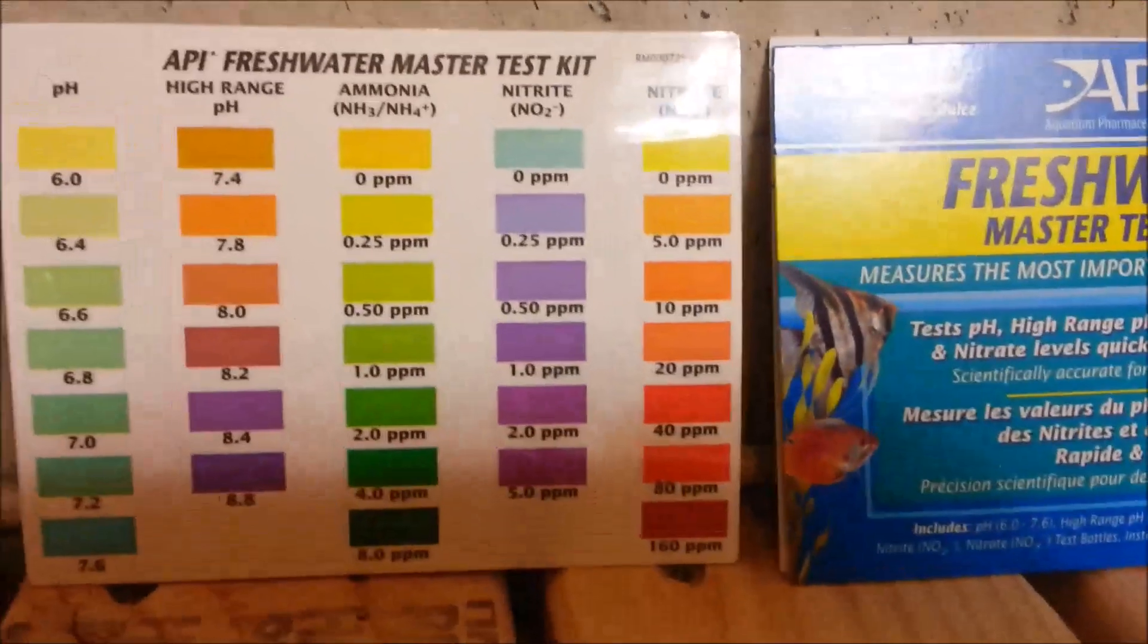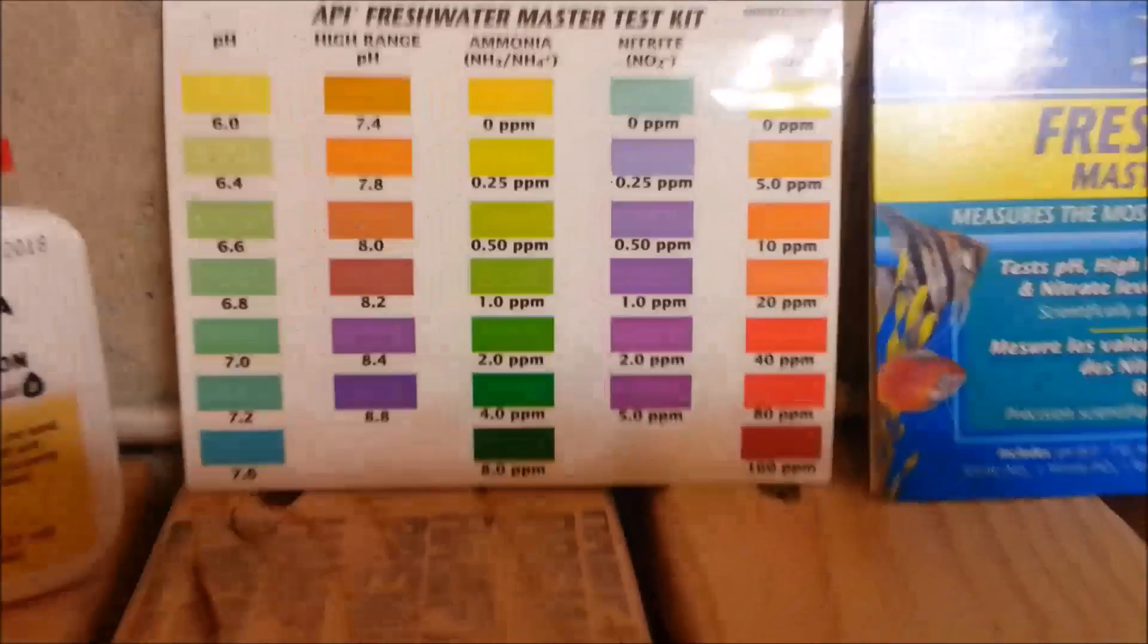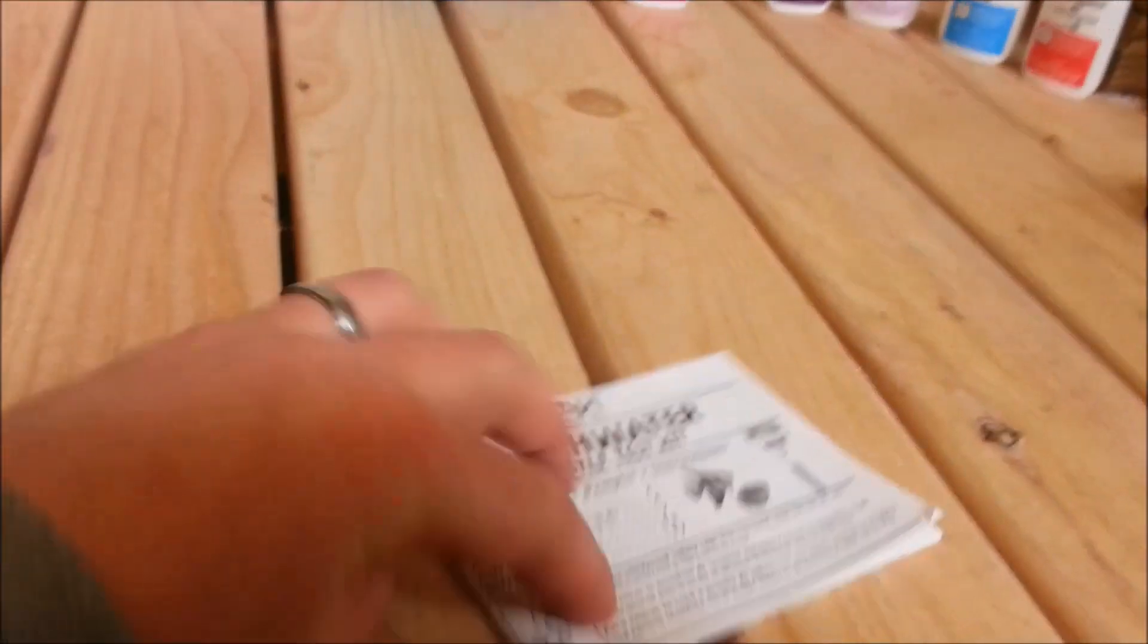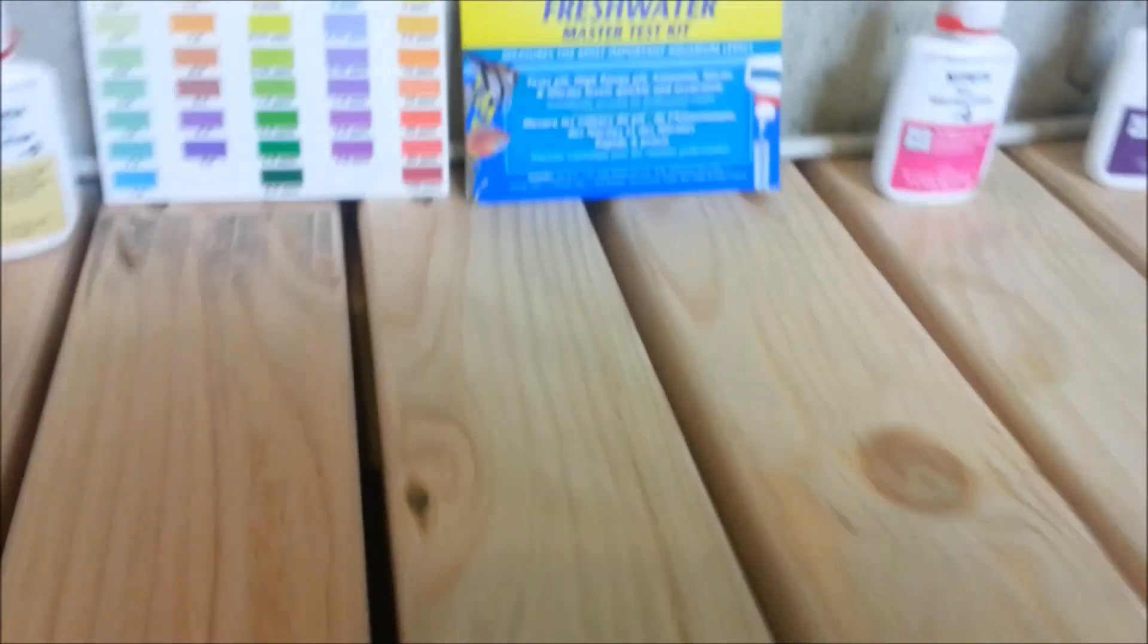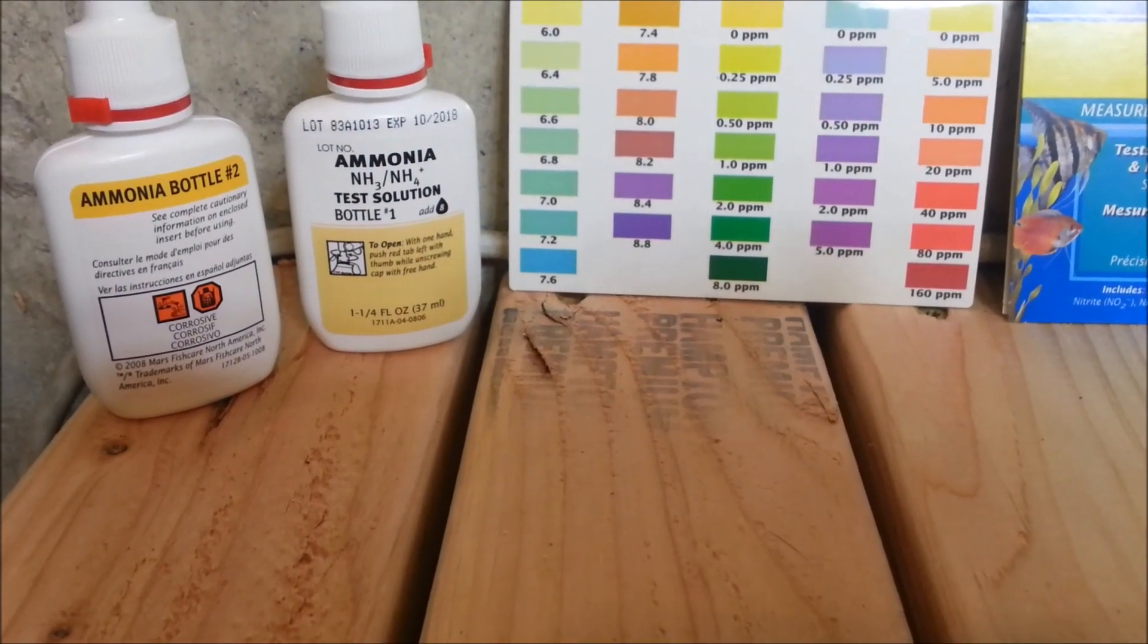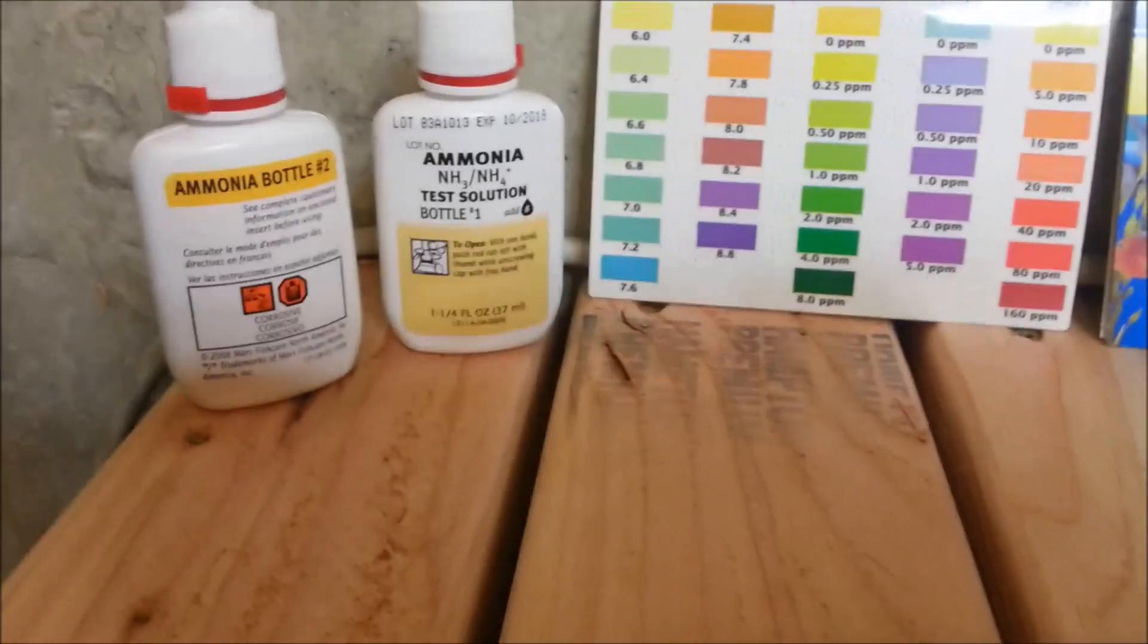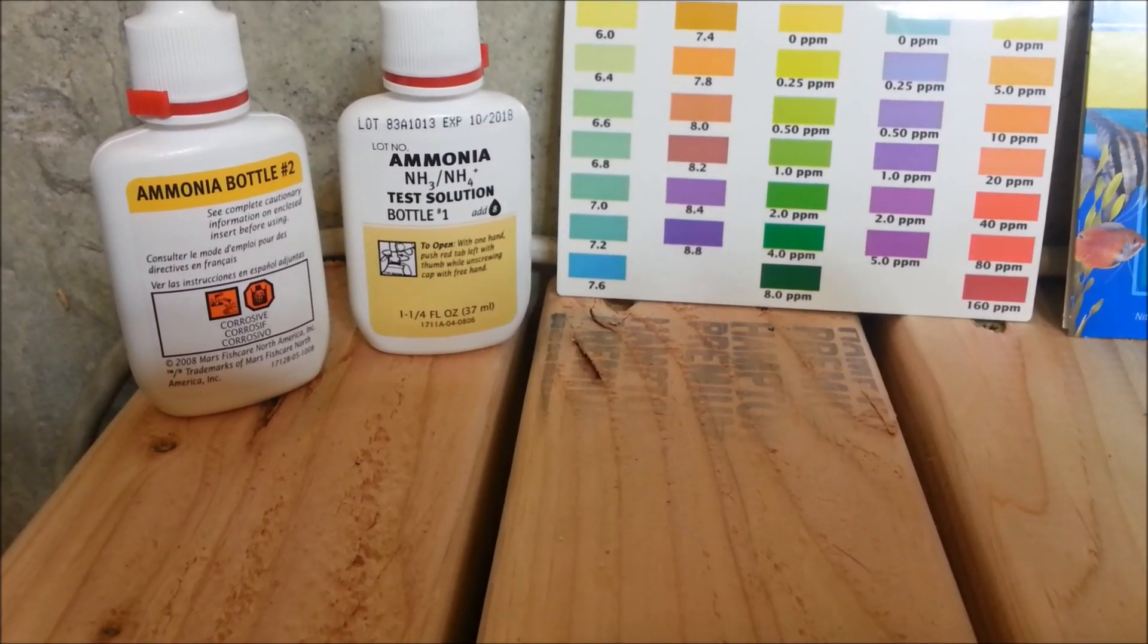For each of the tests there's a little instruction booklet that comes with it. It's really detailed, tells you exactly how to test the water, tells you what the levels should be at. It is for an aquarium, so this is mainly focused on how to take care of the fish, but it kind of tells you where your levels should be at, just gives you a general rule of thumb. Most of the tests just have one bottle, so you just follow the instructions. It tells you which bottle to put in and how many drops.